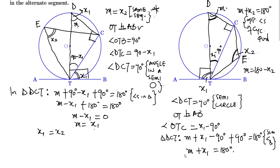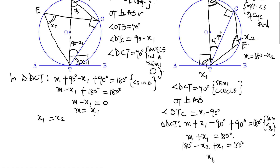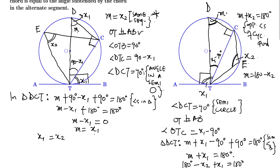Substituting M equals 180 minus X2 into the triangle angle sum, we can establish that the angle between the tangent and the chord is equal to the angle subtended by the chord in the alternate segment — proving the theorem for this second case as well.